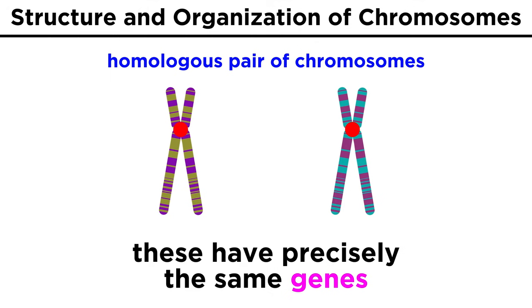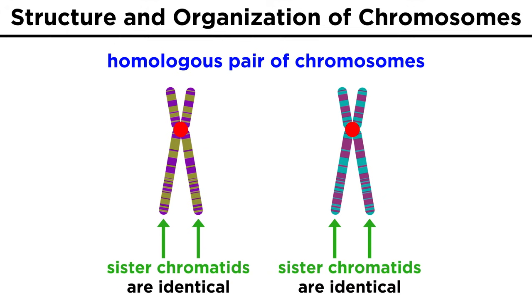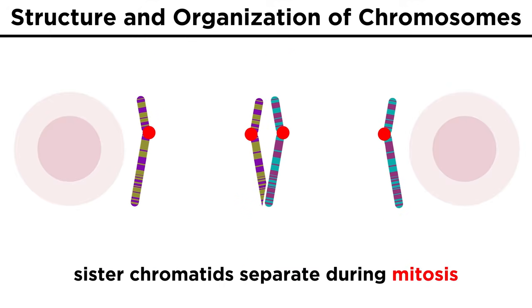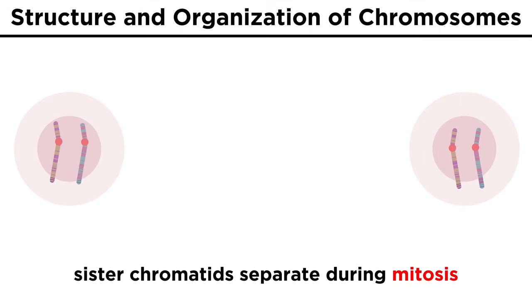Here we can see a homologous pair of chromosomes which contain the same genes, but different alleles for that gene — one from each parent — so these are not precisely identical to one another. But each chromosome consists of two identical sister chromatids, which will be pulled apart during mitosis so that each daughter cell can have a complete set of chromosomes.